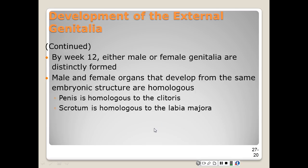By the end of week nine, the fetus begins to show sexual differentiation, and either male or female genitalia are distinctly formed by the end of week 12. In females, the three structures become the clitoris glands, labia minora, and labia majora. In males, the genital tubercle elongates to form the phallus; the urogenital folds fuse to enclose the urethra and form the penis; and the labial sacral folds fuse to form the scrotum.